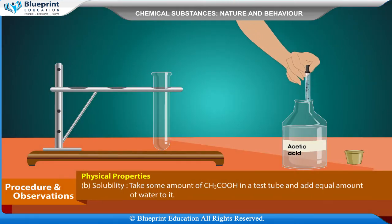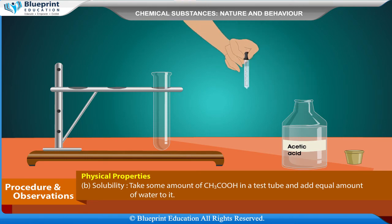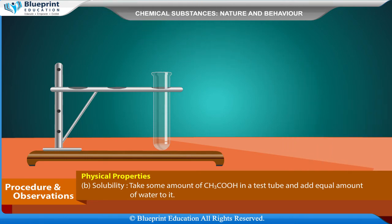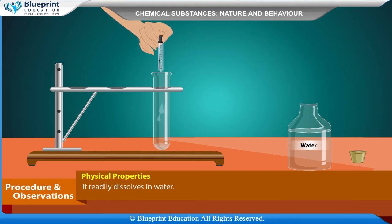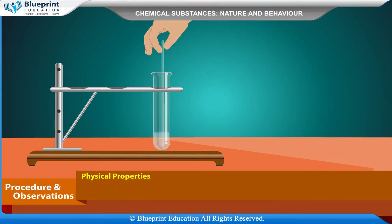Experiment: Solubility. Take some amount of CH3COOH in a test tube and add an equal amount of water to it. Observation: It readily dissolves in water. Inference: Ethanoic acid is soluble in water.